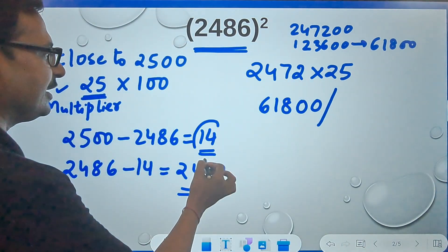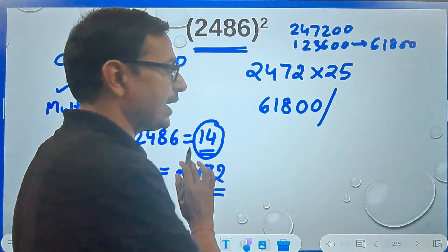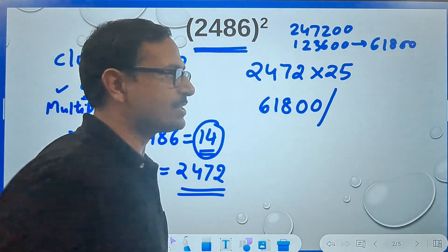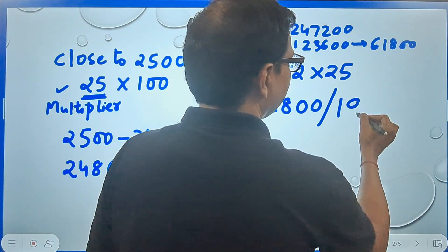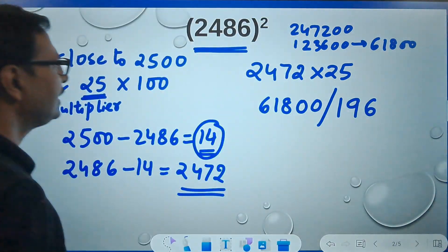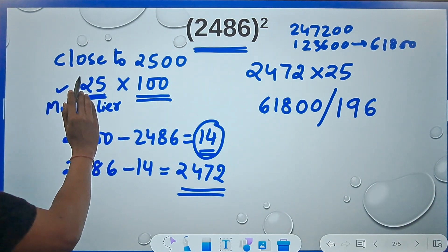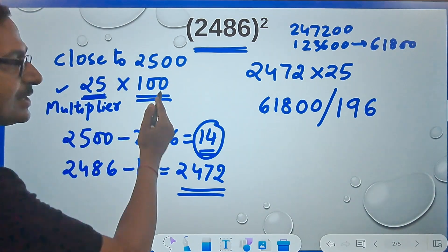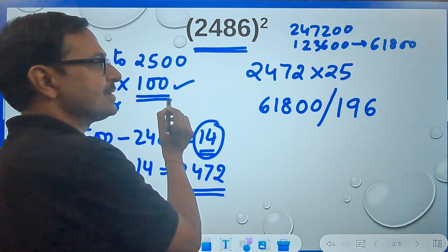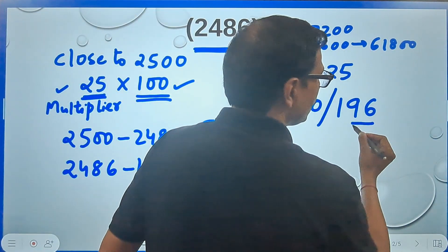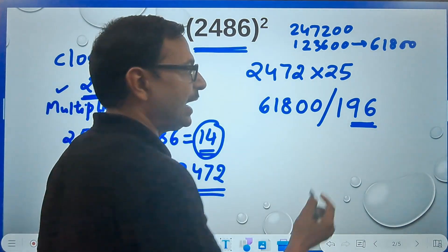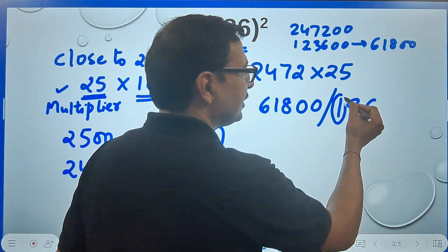This part gives me 61800, I'll put a slash. Now what was the deficit? The deficit was 14, so I will take the square of 14. Square of 14 we all know is 196. We took the multiplier as 25 because there were 25 hundreds. So if we are taking this as hundreds, then we have to take two digits from the right hand side.